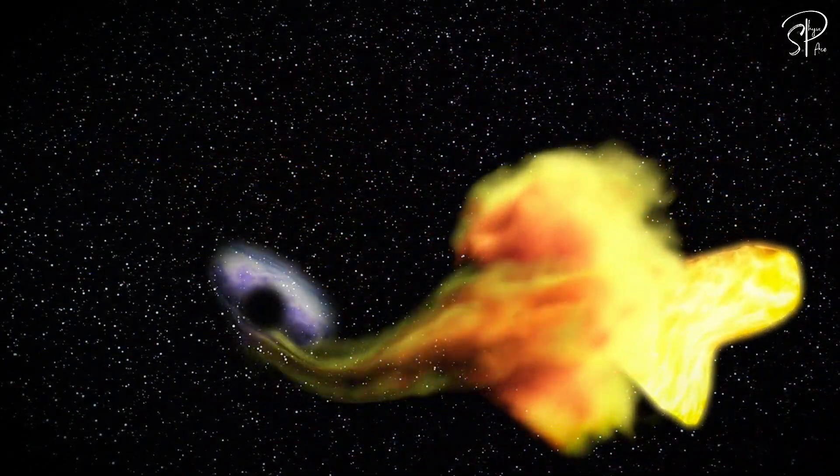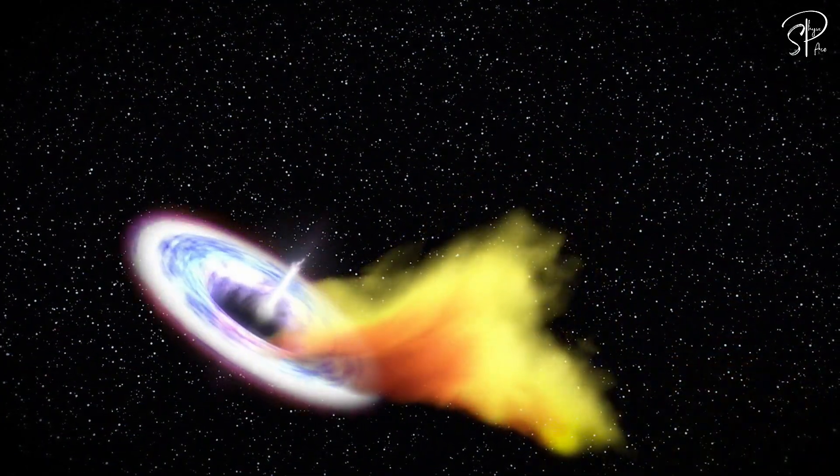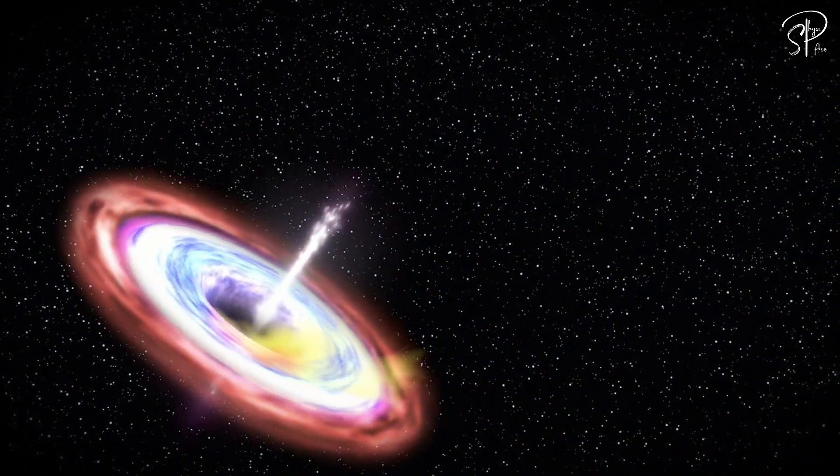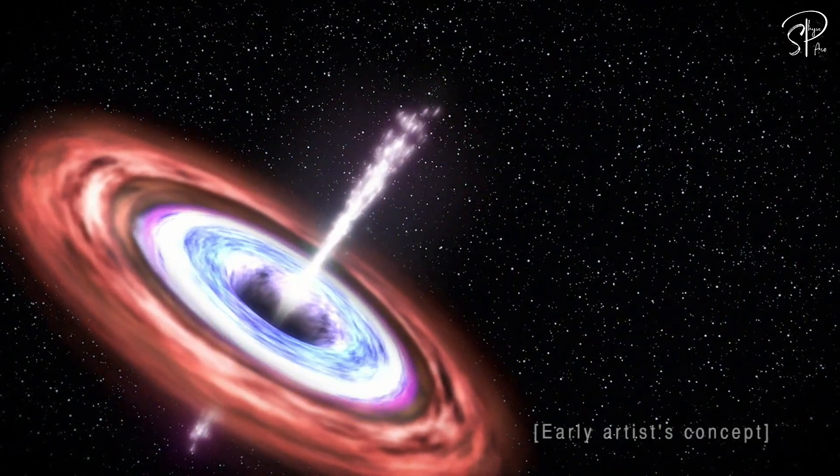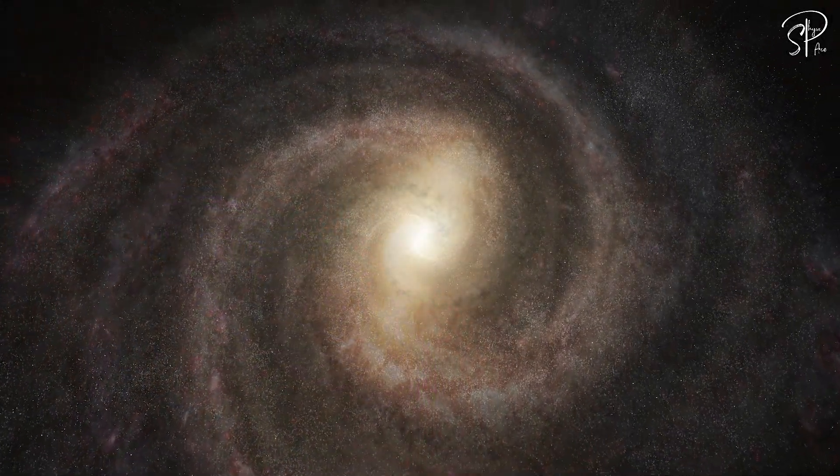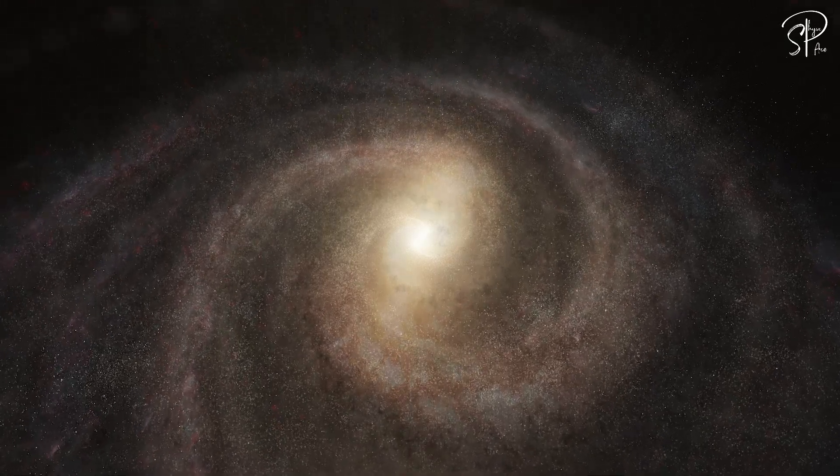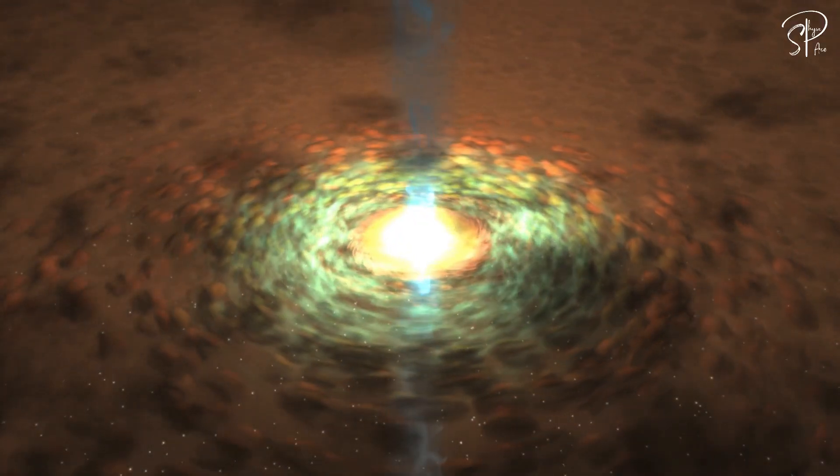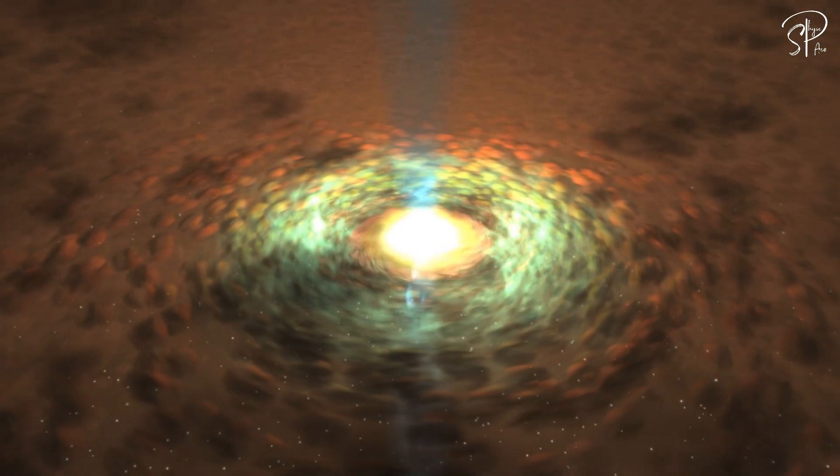This luminosity stems from matter spiraling into the accretion disk, encircling the galaxy's central black hole. Once these conditions are met, the galaxy itself earns the title of an active galaxy, with its core aptly named the nucleus.